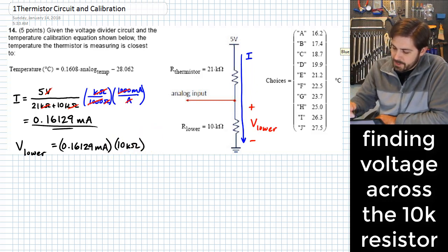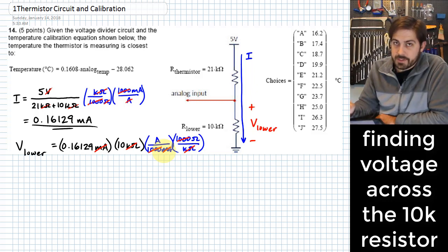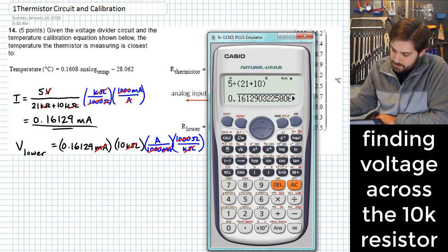And again, I can do a similar thing here, where my milliamps have a thousand milliamps for every amp, and I have a thousand ohms for every kilo ohm. So again, these factors of a thousand would cancel out, kilo ohms would cancel out, the milliamps that I had here would cancel out, and what we're left with is just amps times ohms, which gives me volts. So I'll put these in here.